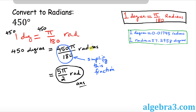Finally, we have 450 degrees and we want to convert to radians. Using the same fact — one degree equals pi over 180 radians — and following the same steps, our answer is 5π over 2 radians. Thanks for watching.